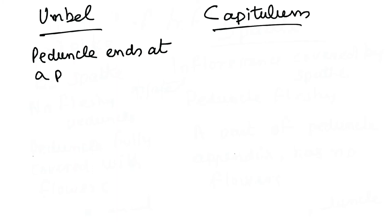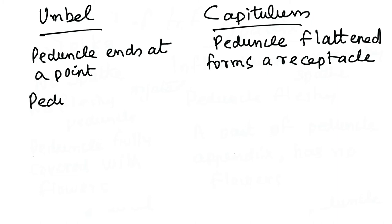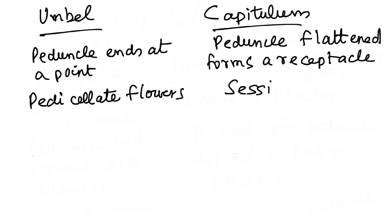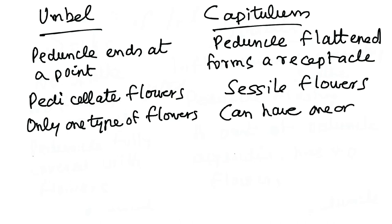Another very important comparison from an examination point of view is the differences between umbel and capitulum. In the case of umbel, the peduncle ends at a point, whereas in capitulum the peduncle is flattened and forms a receptacle. In umbel, the flowers are pedicellate, meaning each individual flower has a stalk, while in capitulum such stalk development for the flowers is absent — the flowers are sessile, developing directly on the inflorescence axis. In umbel there is only one particular type of flower.